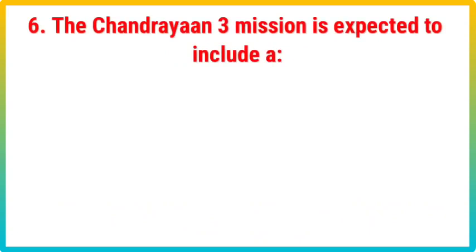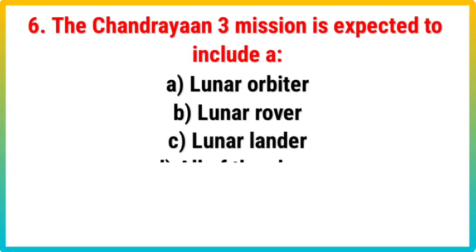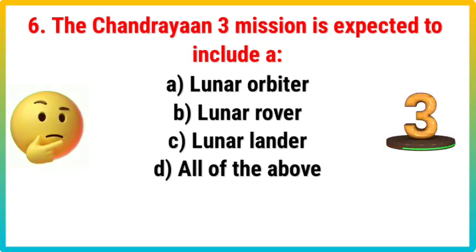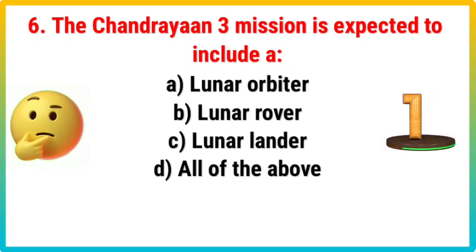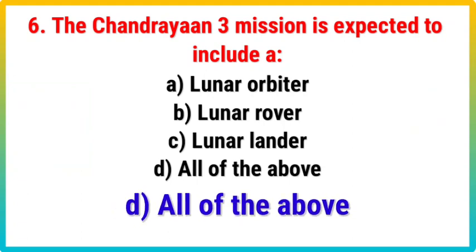Question 6. The Chandrayaan-3 mission is expected to include: Your options: A. Lunar Orbiter, B. Lunar Rover, C. Lunar Lander, D. All of the Above. Correct answer is D. All of the Above.